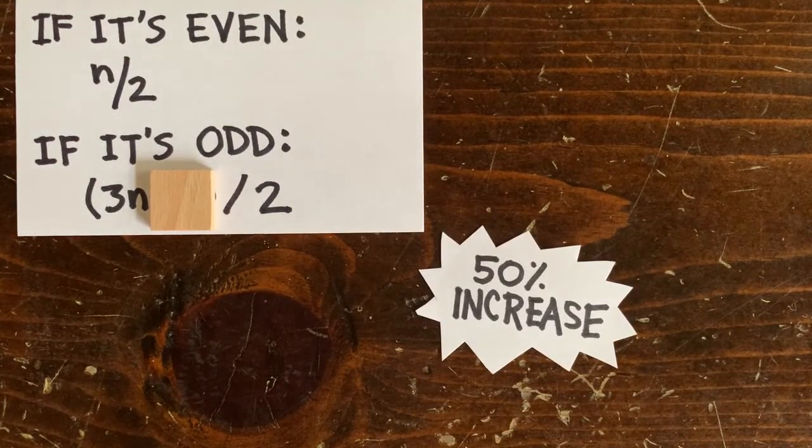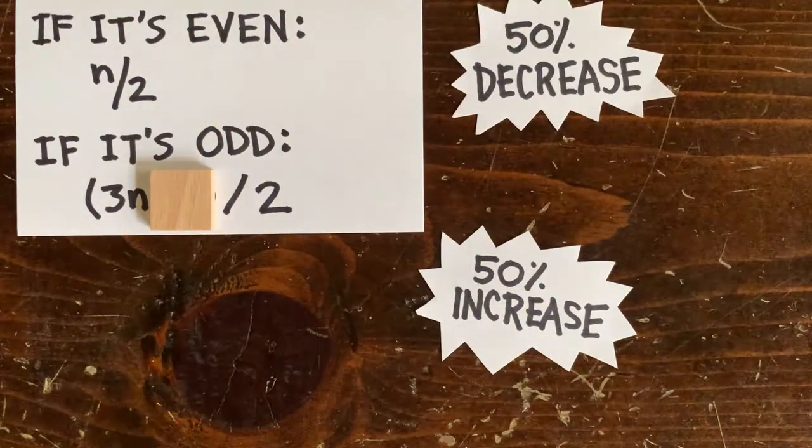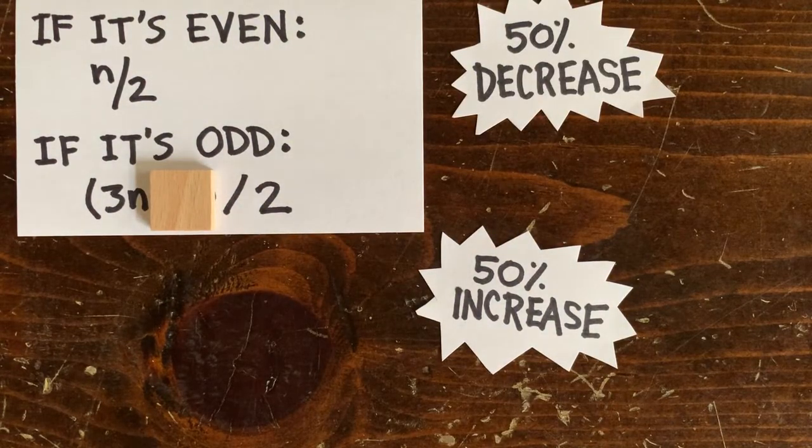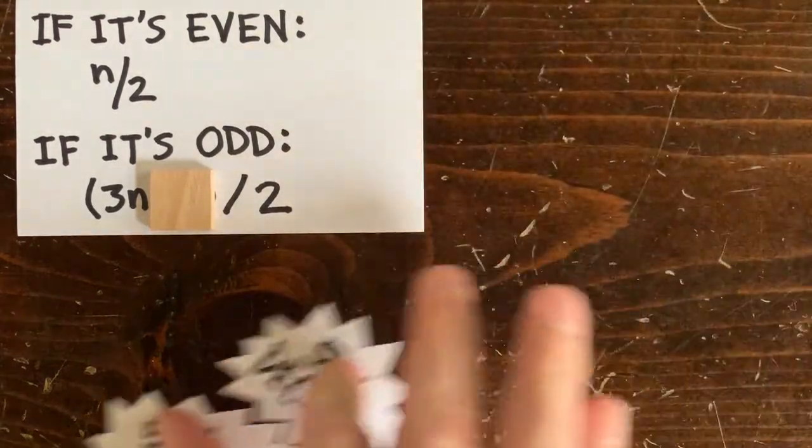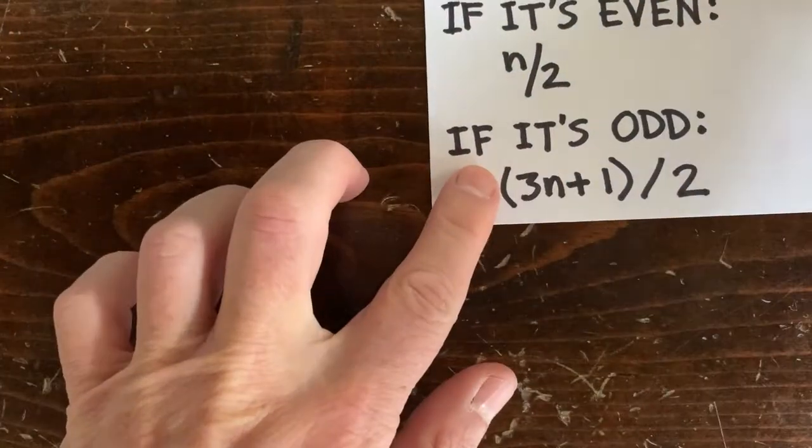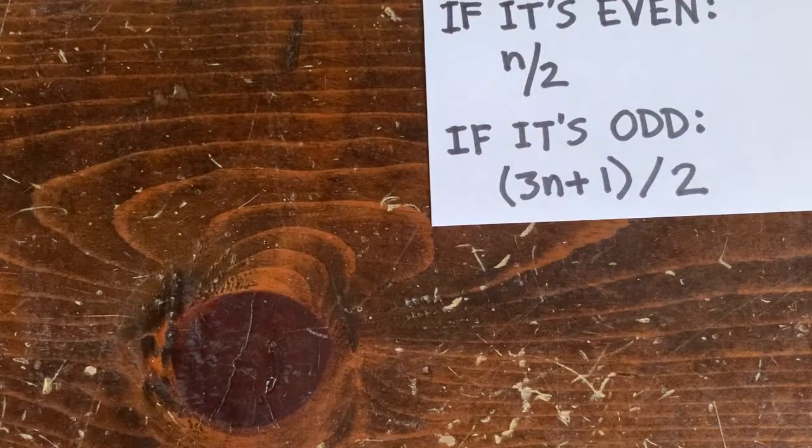Now if we encounter roughly the same number of evens as odds in a 3n plus 1 sequence, won't the sequence kind of bounce around in the neighborhood of the original number with no overall trend up or down? Surprisingly, the answer is no.